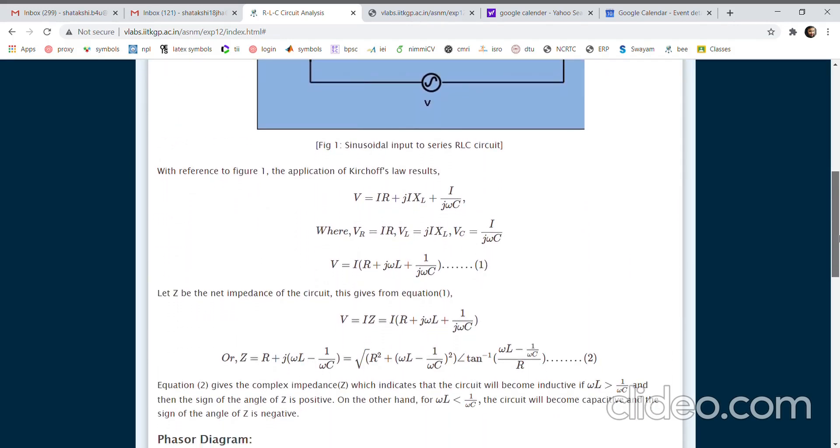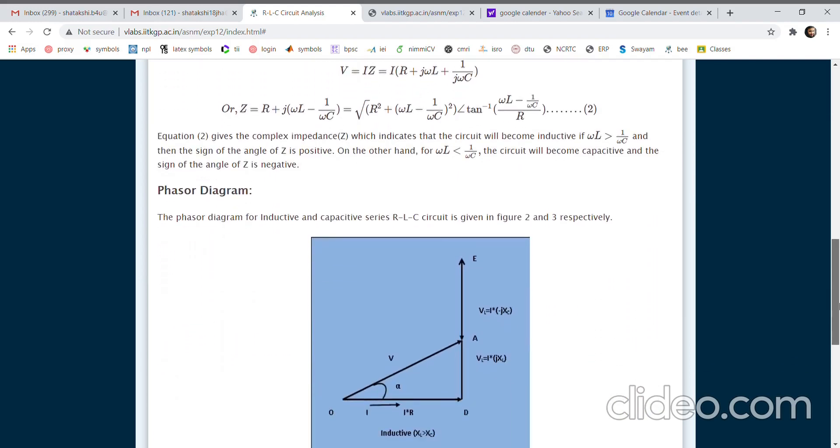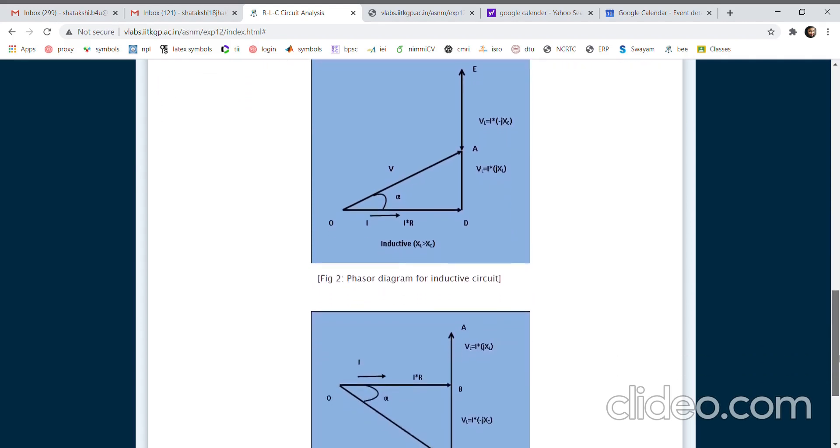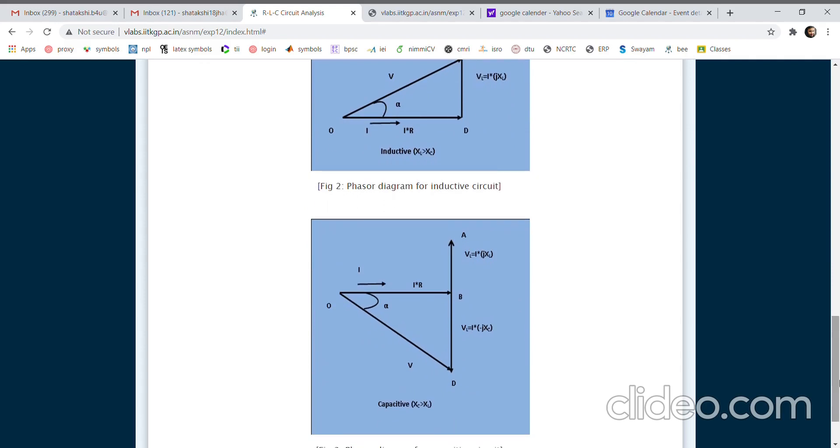In case the inductor is dominating, that is reactance of inductor is more than the reactance of the capacitor, then the circuit becomes inductive and we have a lagging power factor.